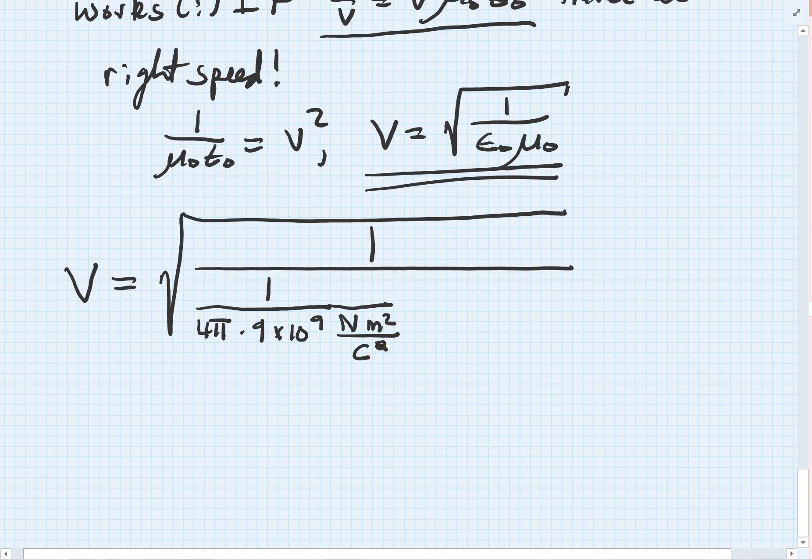Now, mu naught, so this is the epsilon naught term. Mu naught, we know, is 4 pi, exactly, times 10 to the minus seventh. And this actually gives us the force between two currents, so this is in newtons per amps squared.